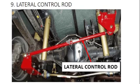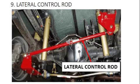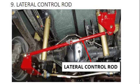Komponen yang kesembilan adalah lateral control rod. Letaknya di bagian belakang, pada suspensi belakang. Modelnya terhubung dari kiri dan kanan. Fungsinya adalah untuk menahan axle dan bodi agar tetap pada posisinya dari tekanan dan beban samping, khususnya saat mobil berbelok. Lateral control rod ini terdapat pada suspensi belakang.